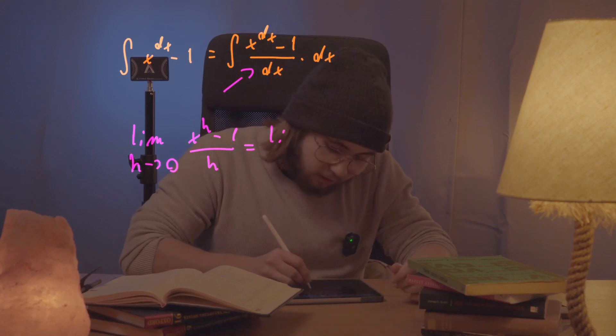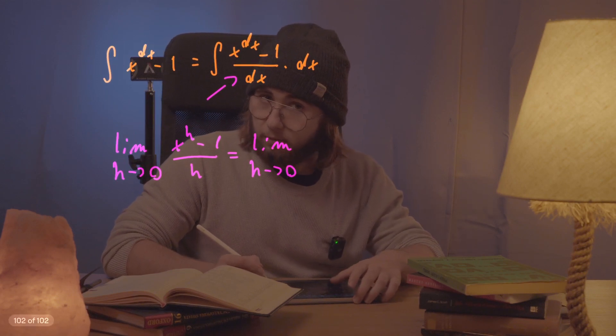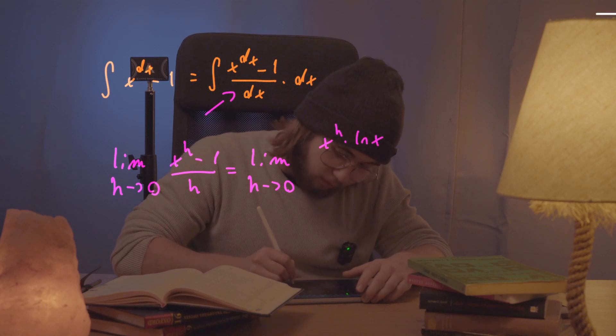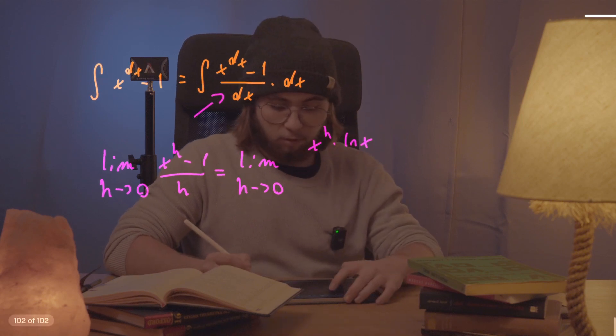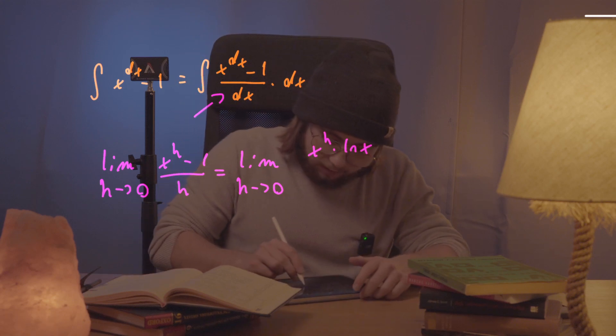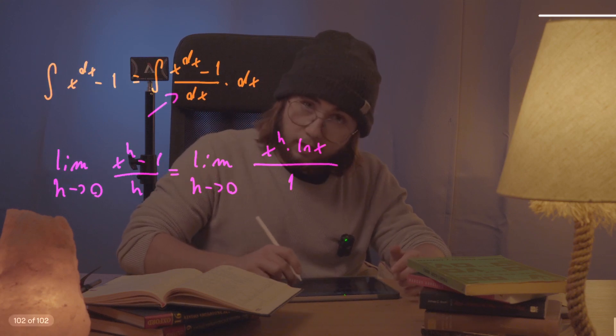And so we can just say it's going to be equal to the limit as h approaches zero of the derivative of x to the power of h minus one with respect to h, which is equal to x to the h multiplied by natural log of x, because that's going to be the derivative of x to the power of h. And the derivative of negative one is going to be just zero and the derivative of h here on the bottom side of the equation is going to be just one.